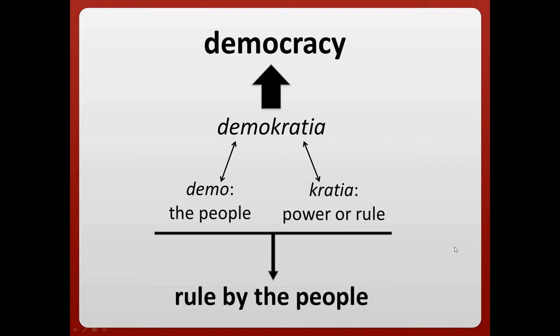Athenian democracy was a direct democracy, meaning citizens could directly vote on laws and government actions themselves — they didn't choose someone else to do it. This is different from America, where we have a representative democracy or a republican form of government, in which we choose people to vote on laws for us. We don't get to make our own laws.